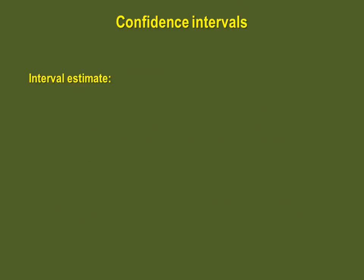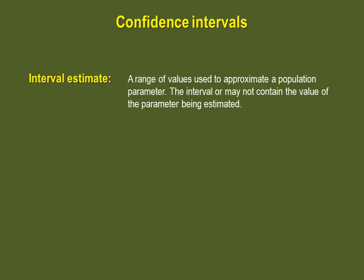To answer this question, statisticians use interval estimates, which are ranges of values used to approximate a population parameter. The interval may or may not contain the value of the parameter being estimated. Of course we hope that it is, but the essence of estimates implies that it might not be.